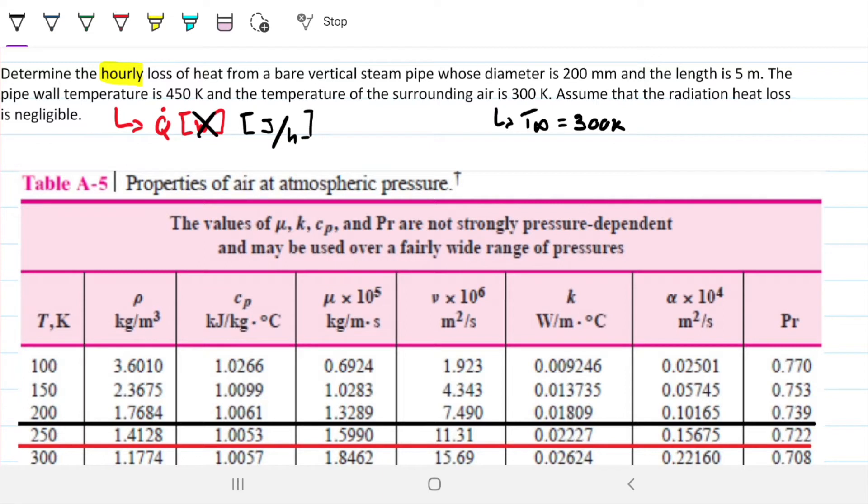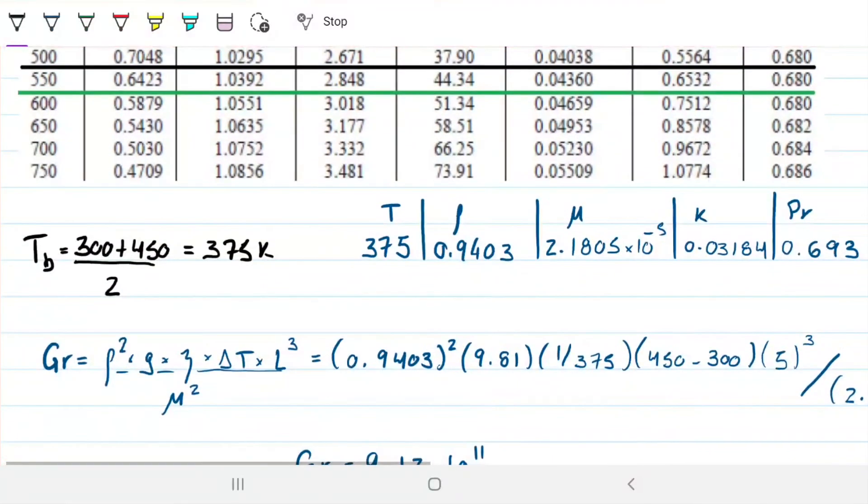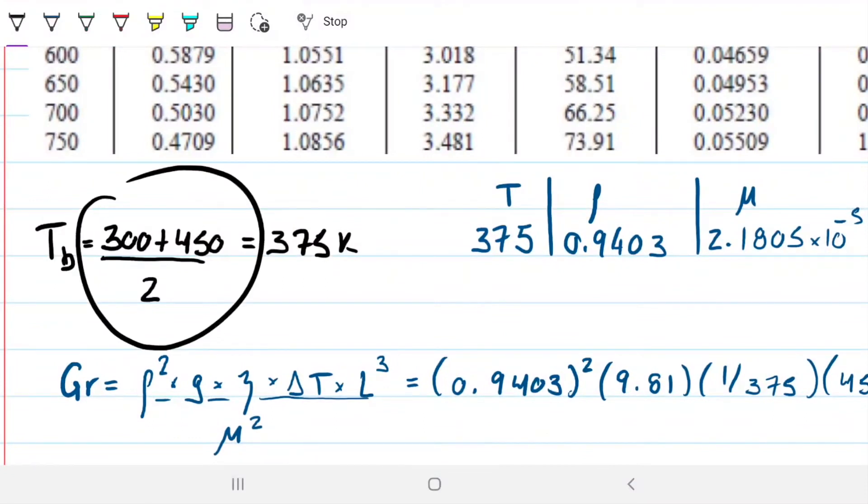We can assume radiation to be negligible. That means we're only going to consider the convection, which is how we expect heat to be exchanged between the solid cylinder and the fluid. So first thing we're going to do is actually find what will be a good mean temperature or bulk temperature between these two guys here, so that we can grab the properties for air.